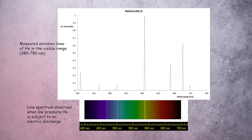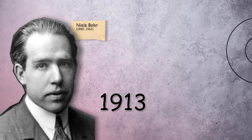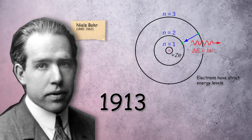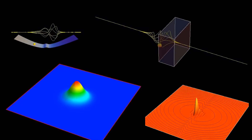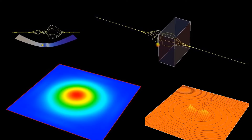The second problem with Rutherford's model is that it cannot explain atomic spectra — for example, it doesn't answer the question as to why an atom only emits and absorbs specific frequencies of electromagnetic radiation unique to that element. A few years after, Niels Bohr did develop a theory to resolve these issues, and even though this theory is now obsolete, it would be a precursor to quantum mechanics.